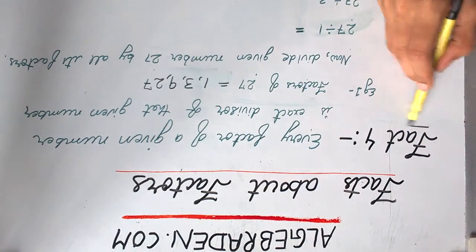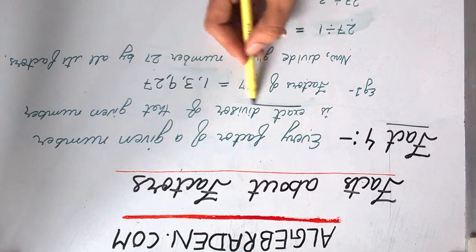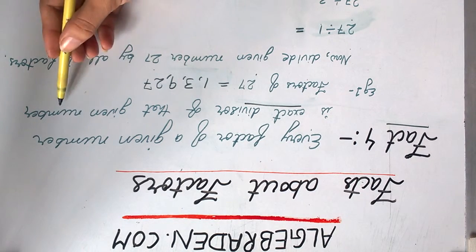Facts about factors. Fact 4: Every factor of a given number is exact divisor of that given number.